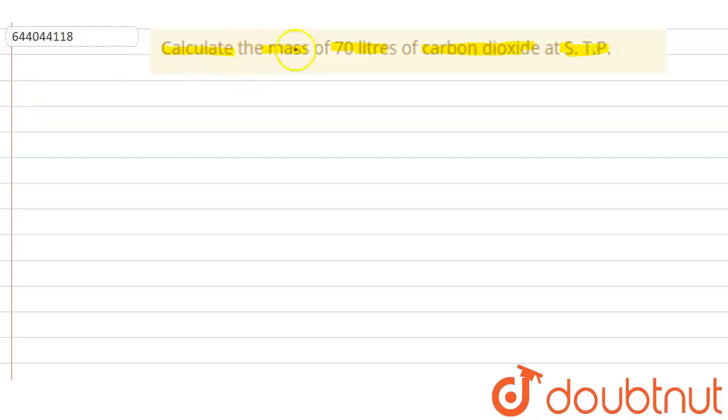So in this question, we have to find out the mass of 70 liters of carbon dioxide at STP. Now first of all, we will calculate the molar mass of carbon dioxide.